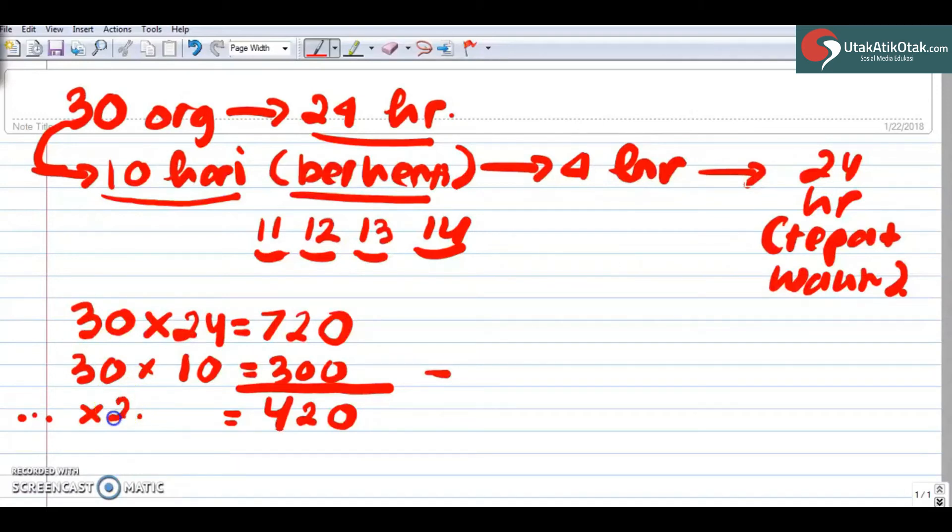Berarti kan 24 dikurangi 10 dikurangi 4, yaitu dari 24 ini, 10 harinya ini, 4-nya ini karena berhenti selama 4 hari. Jadi sisanya yang kita dapatkan adalah berapa? 24 kurangi 10 adalah 14, 14 kurangi 4, 10.